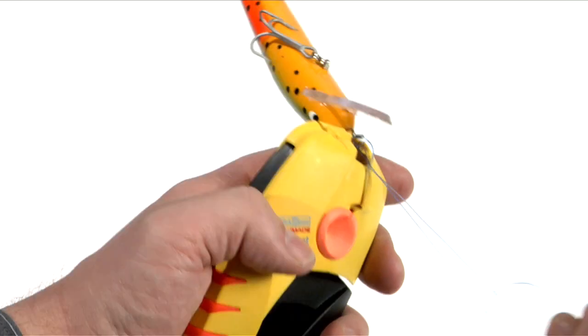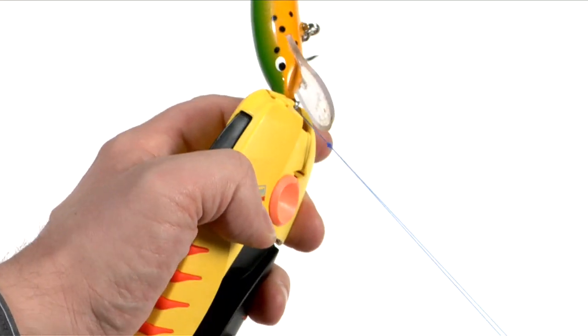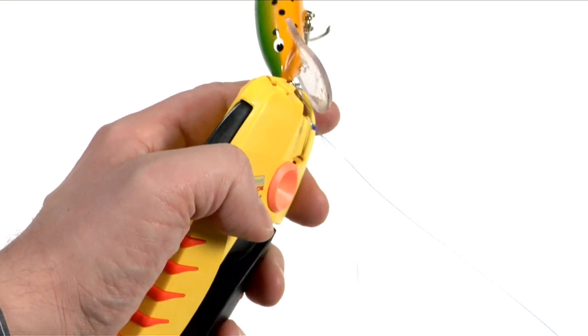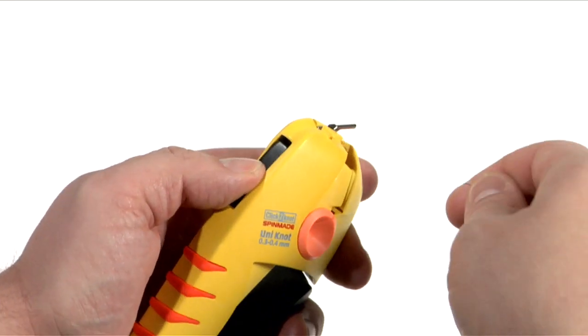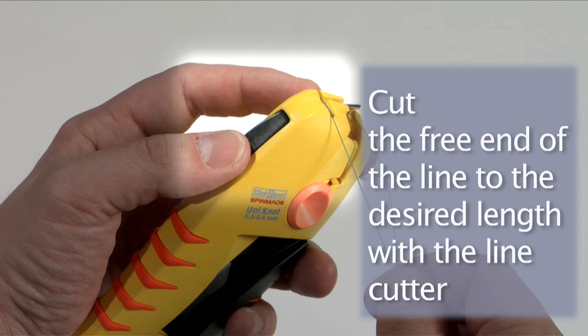After you've pulled it slowly and you see that it's formed a good knot, next remove your fishing lure from the Click to Knot and cut the end of the line to the desired length with the line cutter.